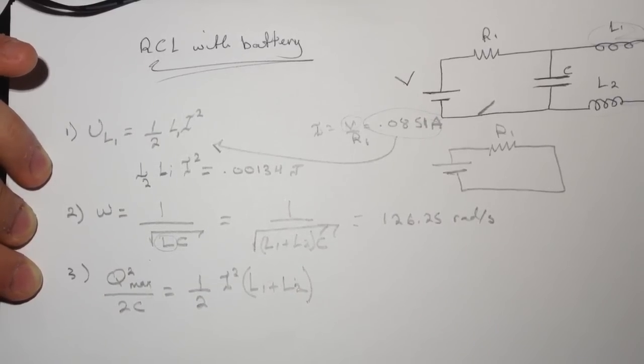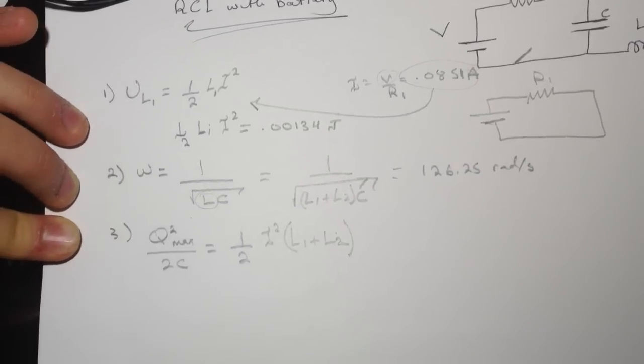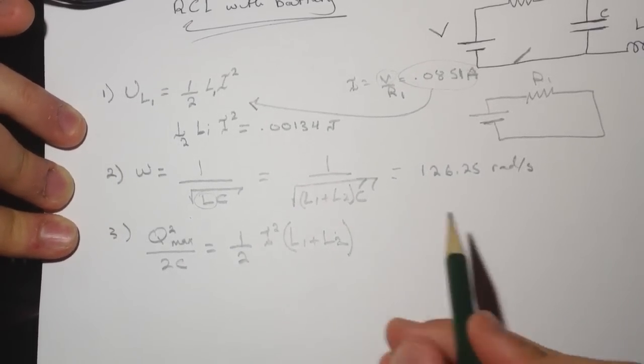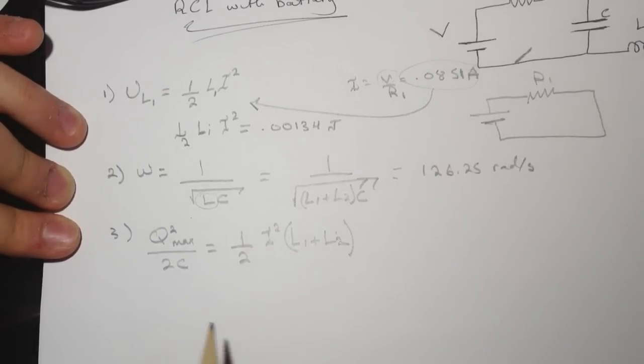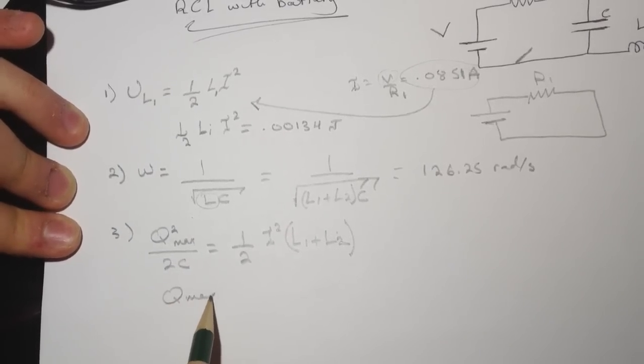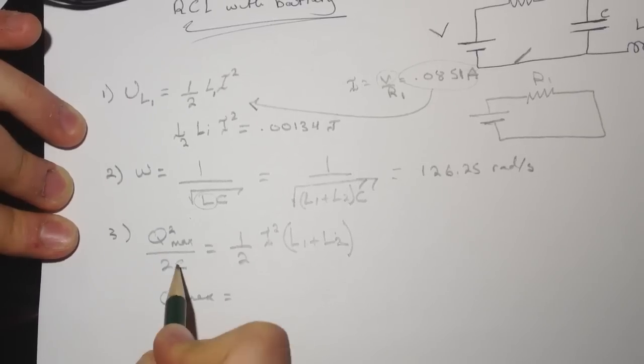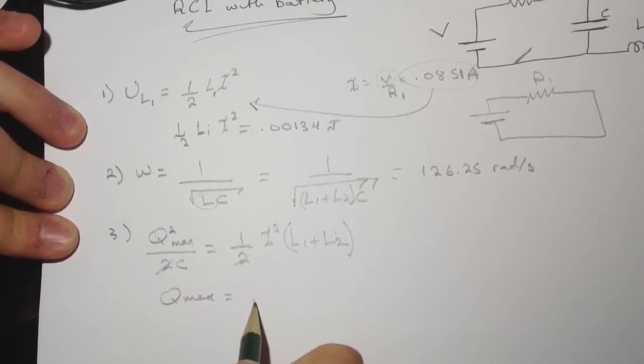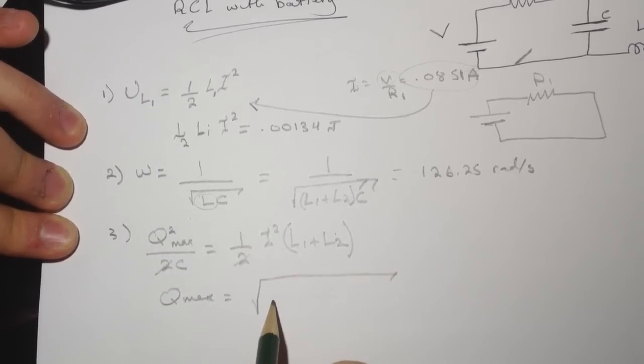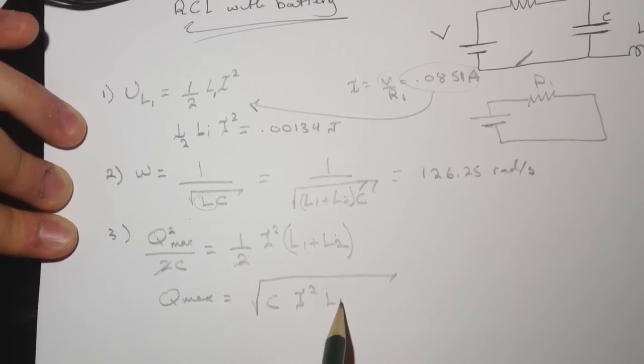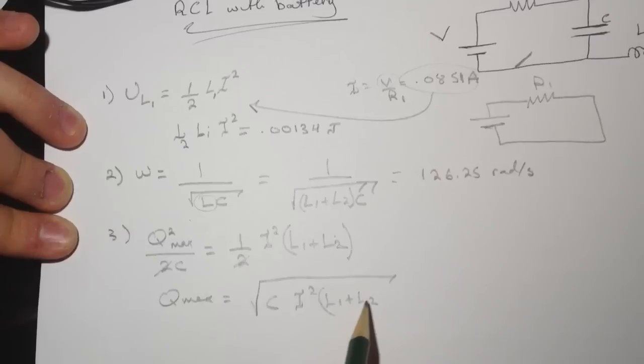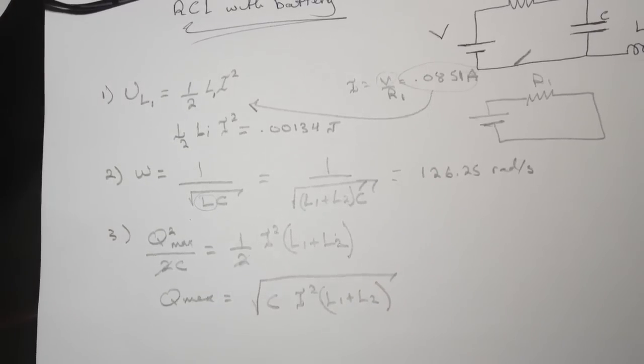We're going to add the two inductors together here, and then Q_max will be equal to—we cancel this and we cancel this, and we take the square root of it all—will be C I squared L1 plus L2.